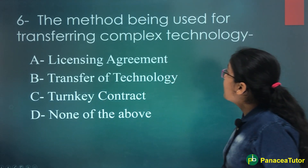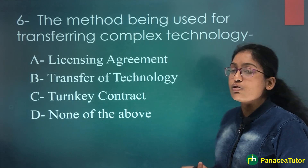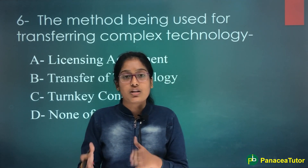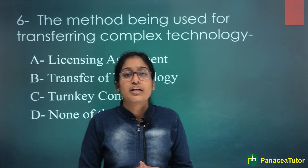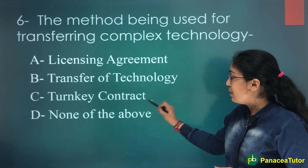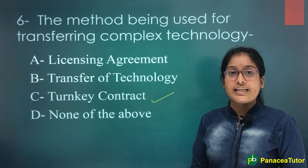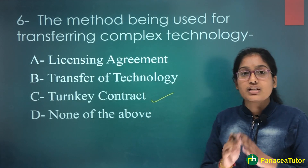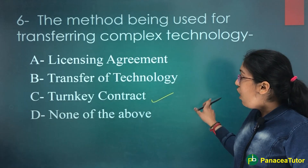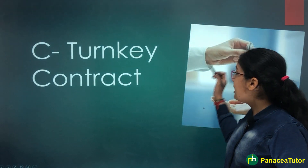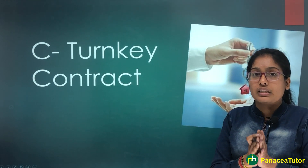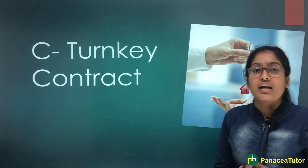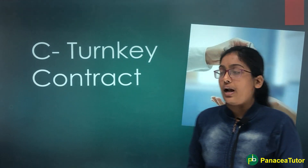Next question: What is the method used for transferring complex technology? The method is called a Turnkey Contract. Turnkey Contract means the project is complete and handed over to the other person, ready to use. That is known as a Turnkey Contract.